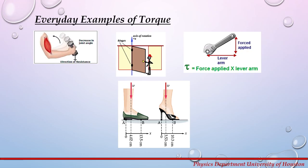Another everyday example of torque is wearing high heels. When you wear a flat shoe, there will be a vertical upward force at point A and point B, and the weight of the person will be evenly distributed across the foot. When you decide to wear high heels, the upward force at point A will have a smaller magnitude than in the flat shoe case, while the force at point B will have a higher magnitude compared to wearing flat shoes.